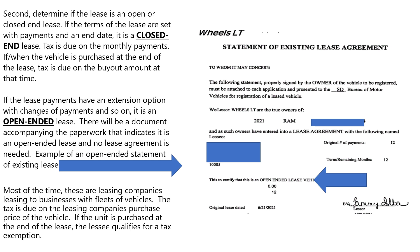An example of an open-end lease statement is attached. Wheels LT is an example of a business that does open-end leasing. Most of the time these are leasing companies leasing to a business with fleets of vehicles. The tax is due on the leasing company's purchase price of the vehicle. If the unit is purchased at the end of the lease, the lessee qualifies for a tax exemption.